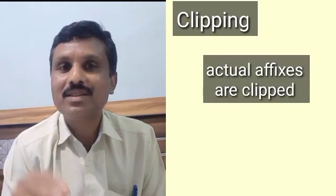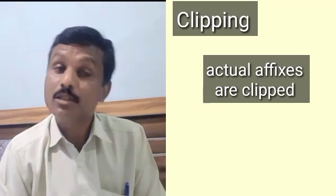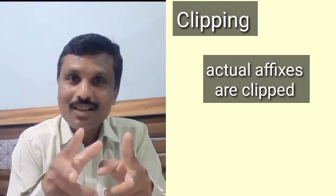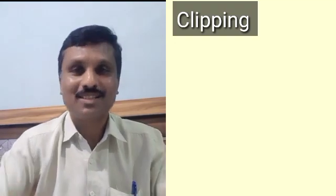Clipping is the process in which suffixes — or prefixes — are actually cut to form new words. Remember: back formation removes imaginary suffixes, while clipping removes actual suffixes. There can be three types of clipping in English: we can cut from the left side (beginning), from the right side (end), or from both sides.